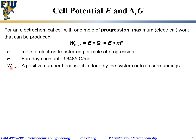W_max, the maximum amount of work, will always be a positive number in this case, because the electrical work is done by the system onto its surroundings — onto the external circuit. So that is a positive number: work done by the system to its environment.